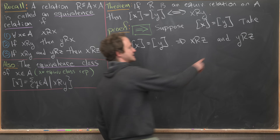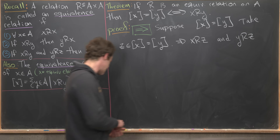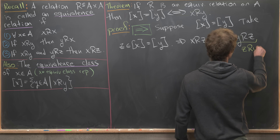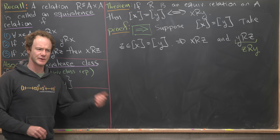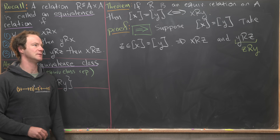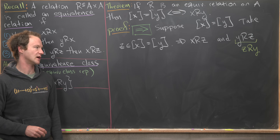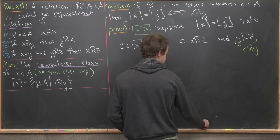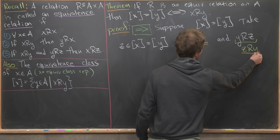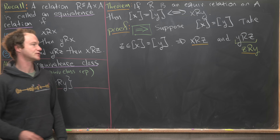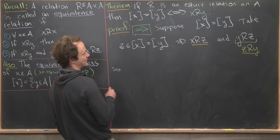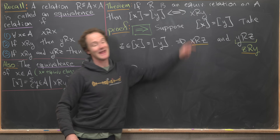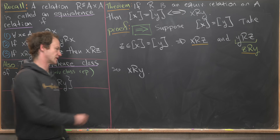Next, we take the fact that Y is related to Z and use symmetry to get that Z is related to Y. We're doing a lot of detail here, maybe more than strictly necessary, but I want to dot all our I's and cross our T's. Now we apply transitivity to X is related to Z and Z is related to Y to conclude that X is related to Y — which is exactly where we wanted to end up at the end of this first direction.